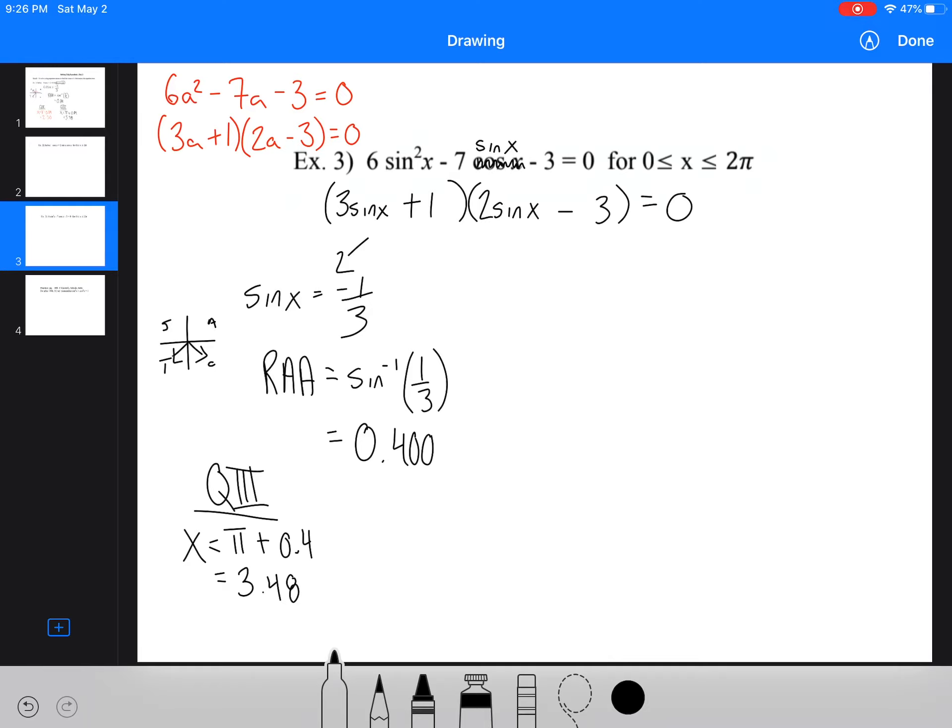Now in quadrant 4, we're going to have 2 pi, because we have to go all the way around, minus 0.4. And that's going to give us 5.94. And we don't have to put any unit, because if we don't put a unit, it's assumed it's in radians.